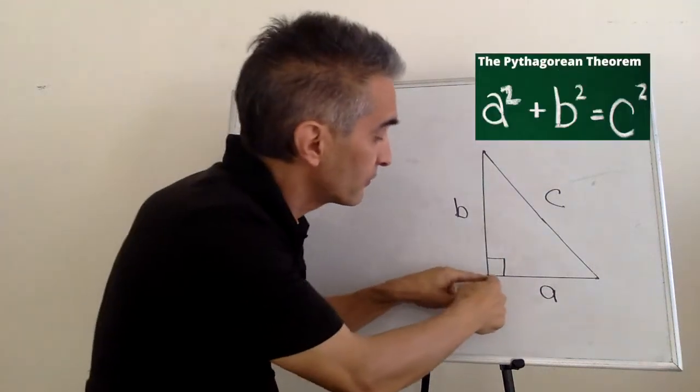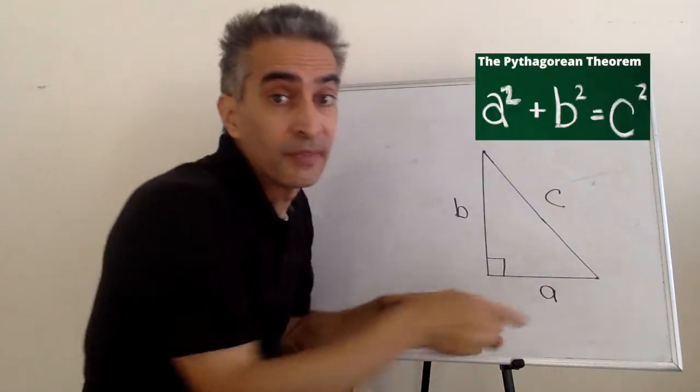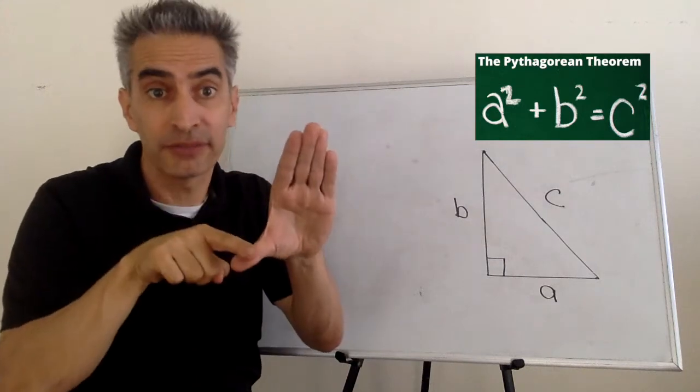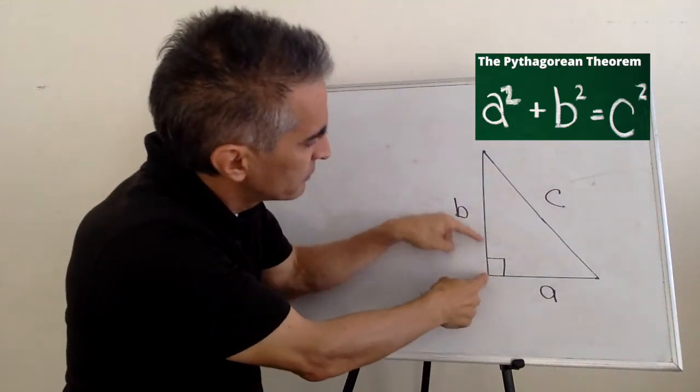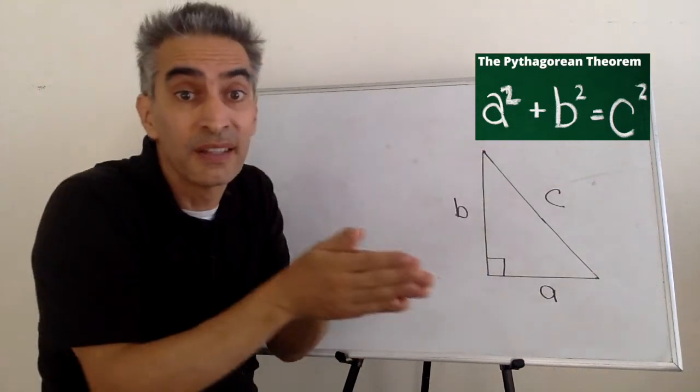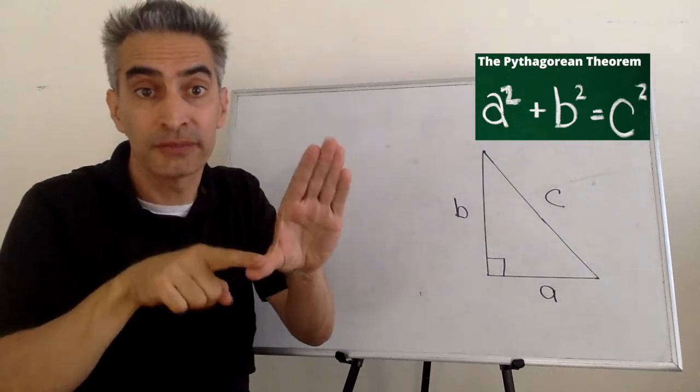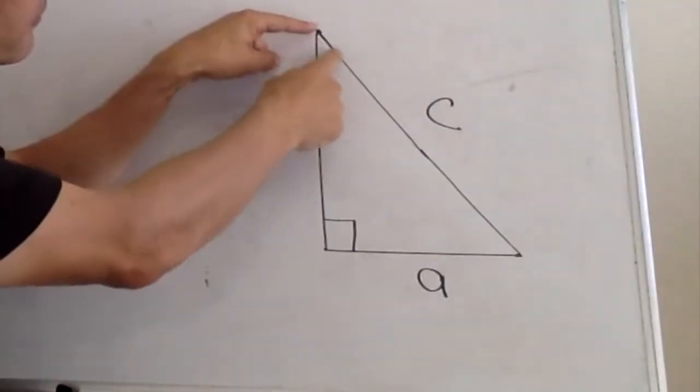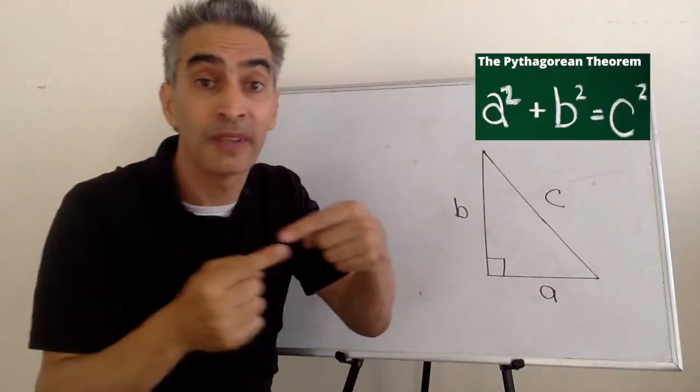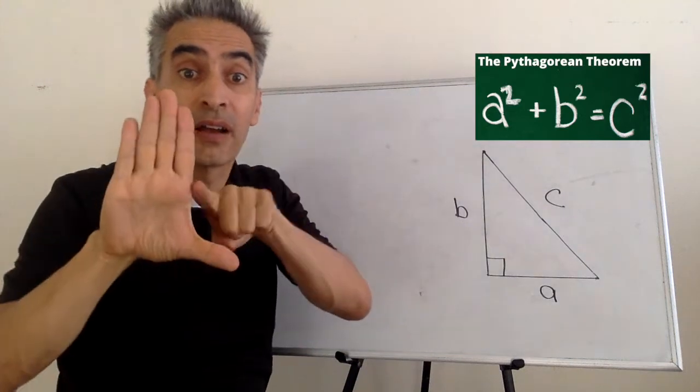What is A? That's this line right here, right next to the right angle. What's B? That's this line right here, right next to the right angle. What's C? That's this line right here, opposite of the right angle.